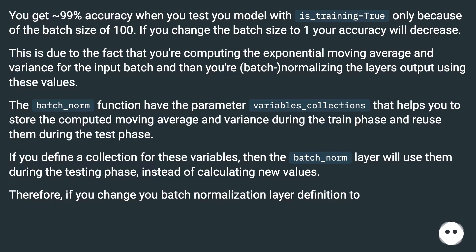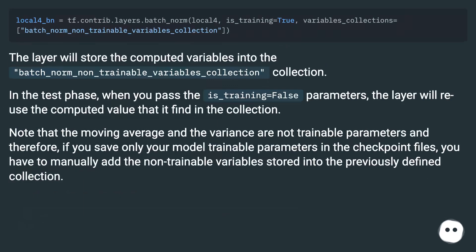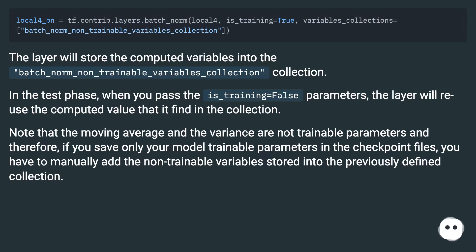By updating your batch normalization layer definition, the layer will store computed variables into the batch_norm_non_trainable_variables_collection. In the test phase, when you pass is_training=False, the layer will reuse the computed values it finds in that collection.